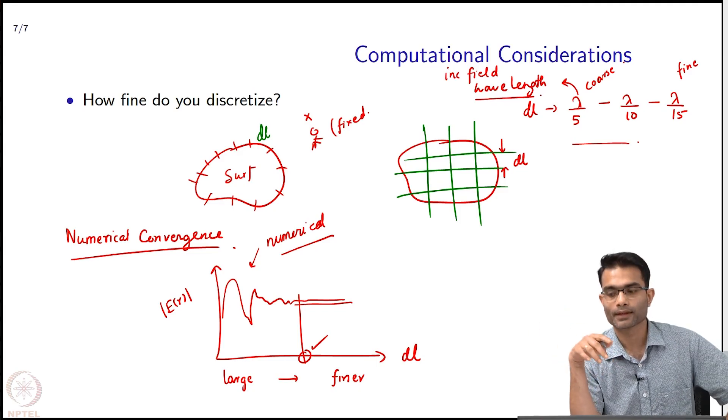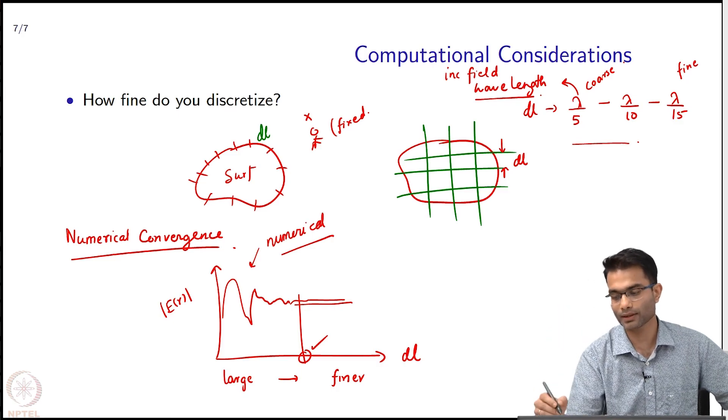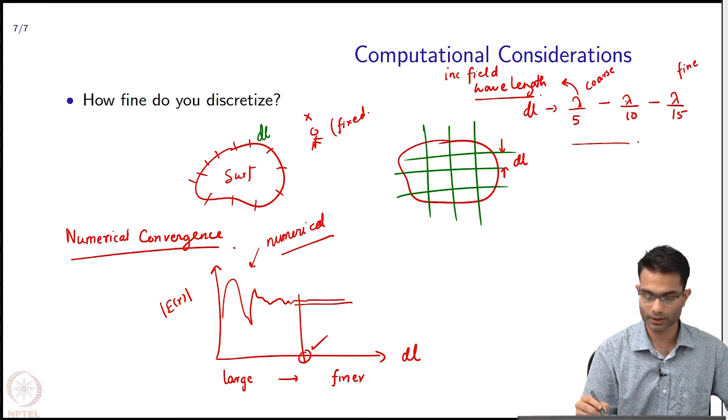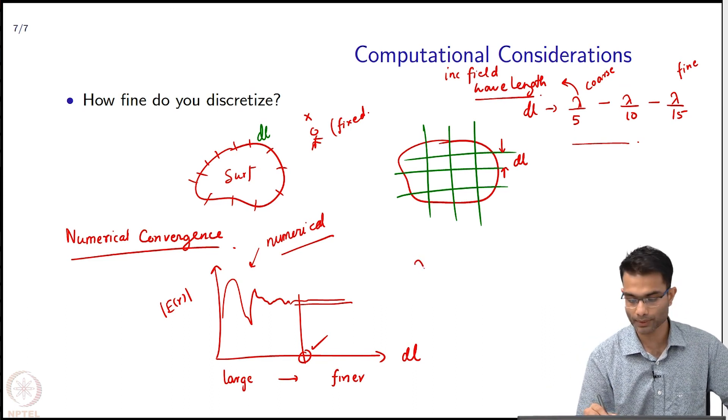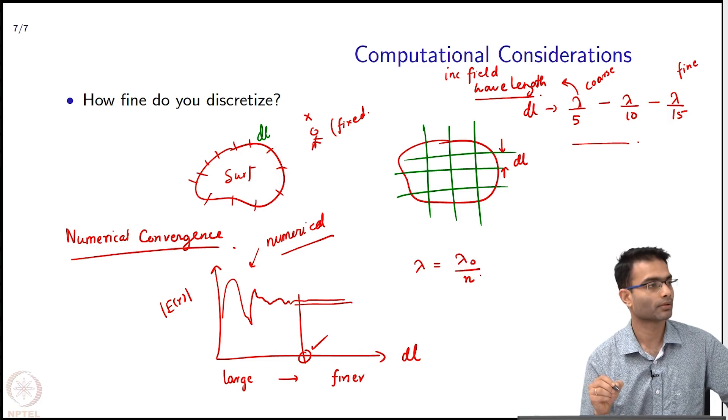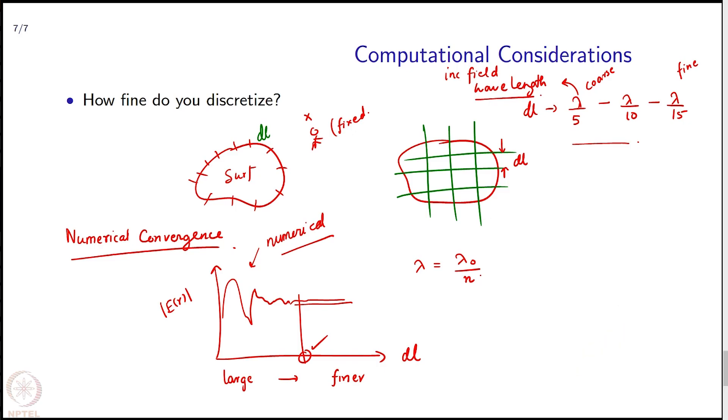Inside the medium. Inside the medium, yes that is a good point. These are values of lambda which are inside the medium. What do I mean by inside the medium? Lambda is equal to lambda naught by the object typically, square root of epsilon_r times mu_r. So n is the refractive index of object.